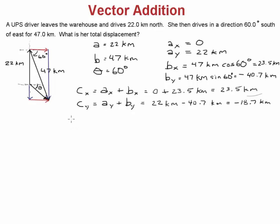But we can do what we learned in the last video at this point. What we're going to do is I'm going to take that the magnitude of C is going to be, using the Pythagorean theorem, it's going to be C_x squared plus C_y squared. Well, C_x is 23.5 kilometers, and then C_y is going to be negative 18.7 kilometers. Extend that out. There we go. And C is going to be 30.0 kilometers.